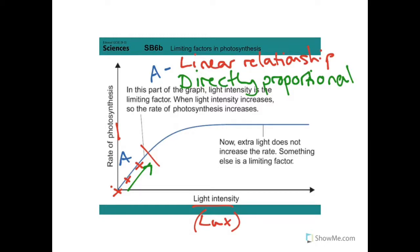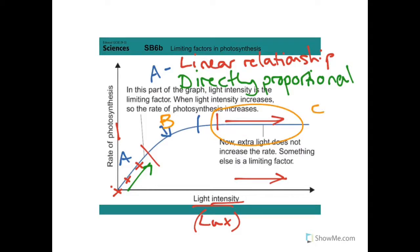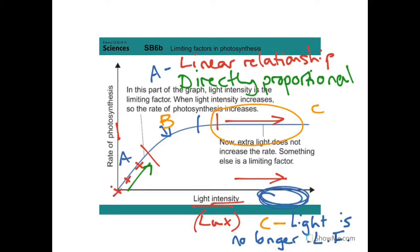If you carried on increasing the amount of light, would it continue increasing photosynthesis? No. Eventually it would have less of an impact, and eventually no impact at all. So here, light intensity is still going up, but the rate of photosynthesis is staying the same. During part C of the graph, light intensity is having no effect on the rate of photosynthesis — because it is no longer the limiting factor. Something else might be, such as the amount of carbon dioxide. The only way to increase photosynthesis at high levels of light would be to increase CO₂ or change the temperature.